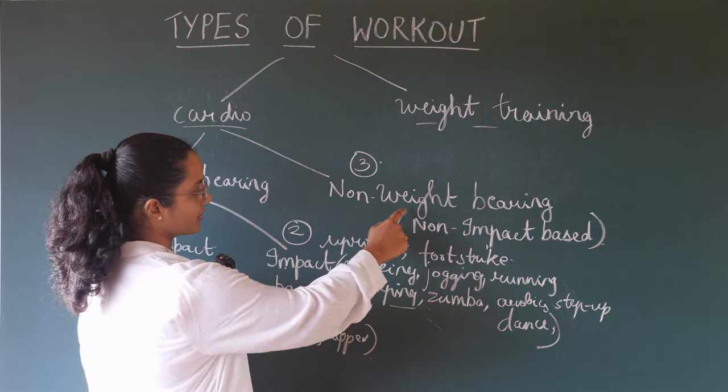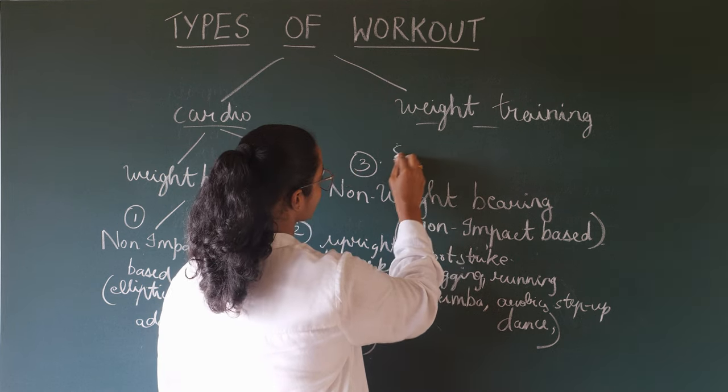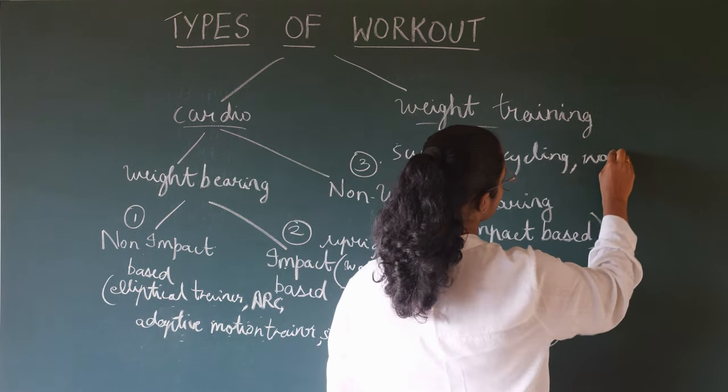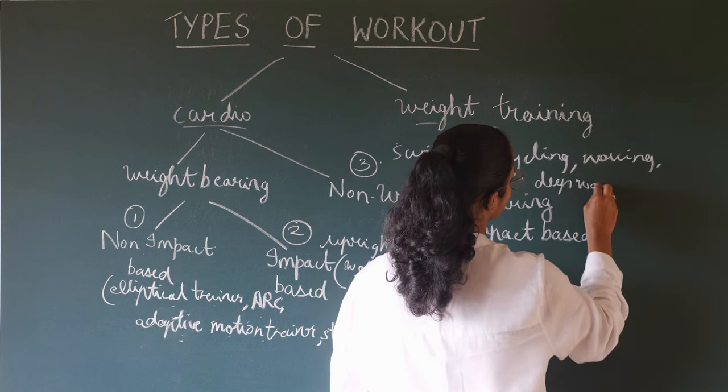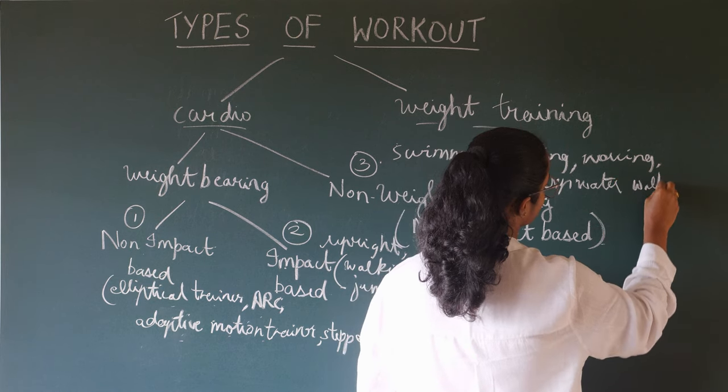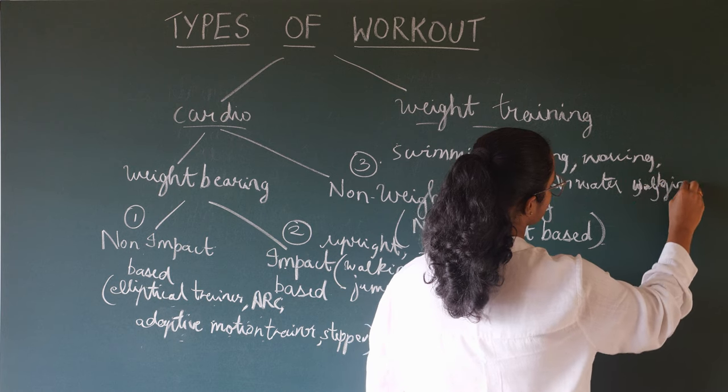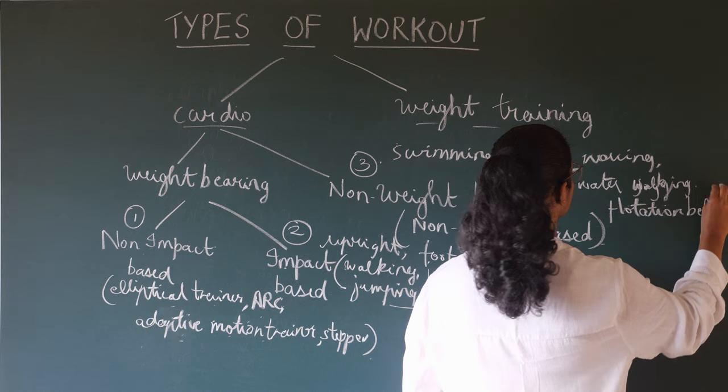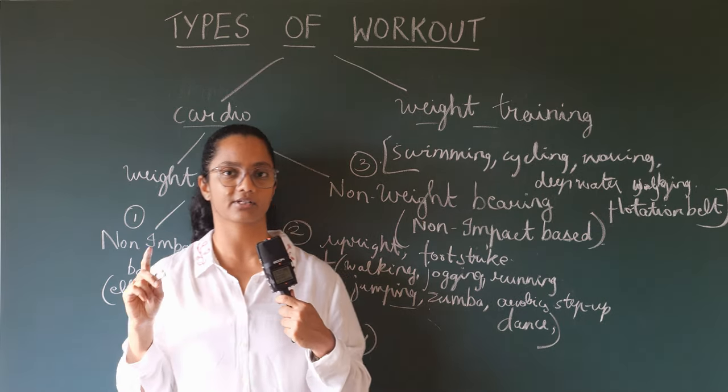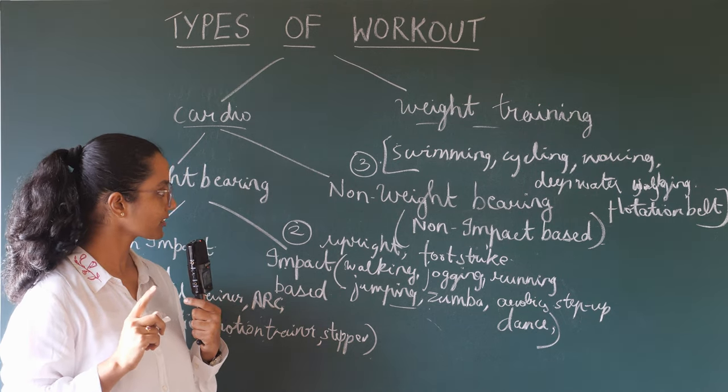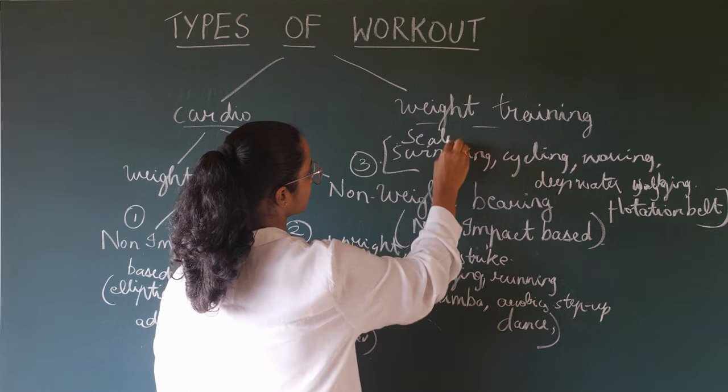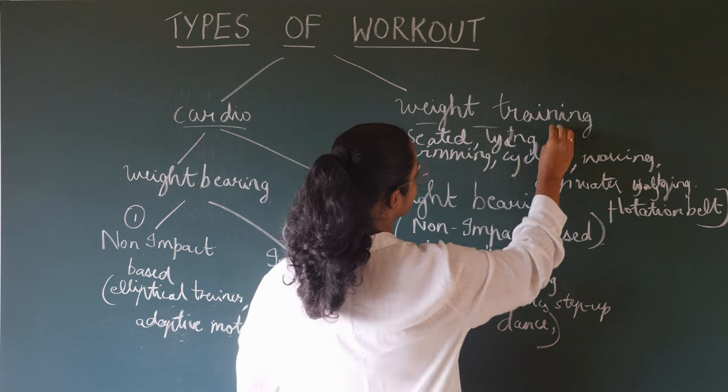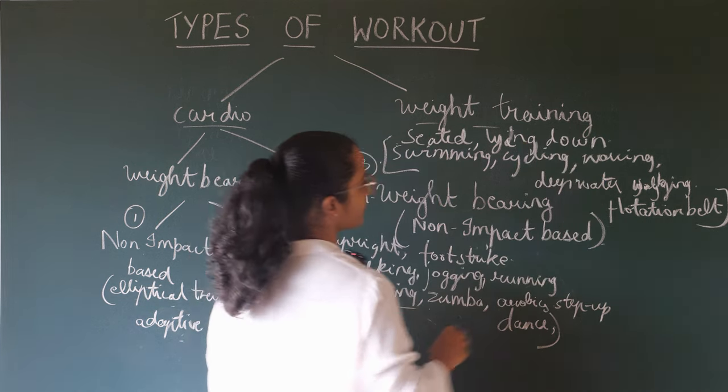In non-weight bearing non-impact based, examples are swimming, cycling, rowing, and deep water jogging or walking using the flotation belt. Here the body is seated or lying down, and foot strike is not taking place.